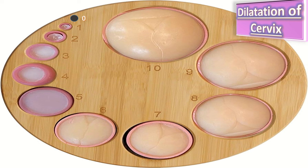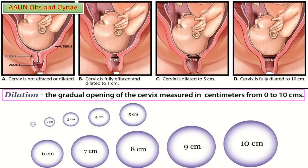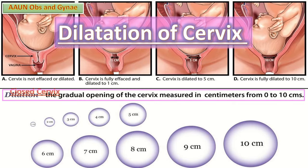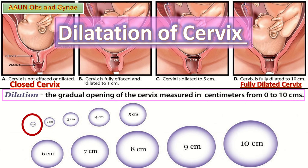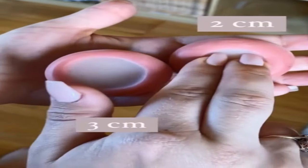Zero means a closed cervix; one centimeter dilatation means only the tip of a finger can pass through the cervix; and 10 centimeters means a fully dilated cervix.